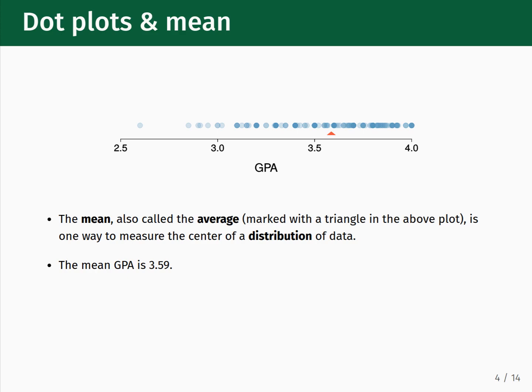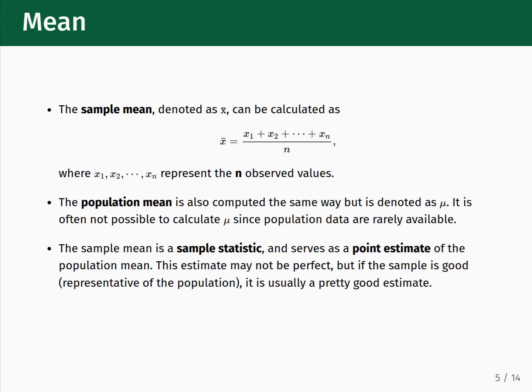In statistics, the average value is also known as the mean value, and it is one way that we can quantitatively measure the center of a plot. Numerically, the mean of the GPA distribution is 3.59. By mean, we mean the sample mean, which is the average of the n observed values in your dataset. This is in contrast with the population mean, which is calculated in the same way, but is only possible to obtain if you can gather all possible observations.